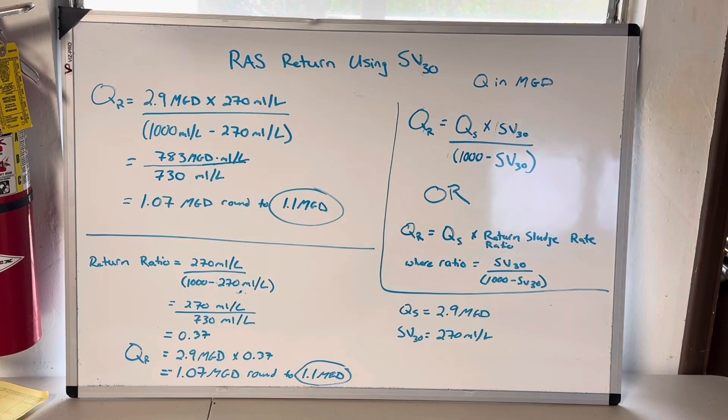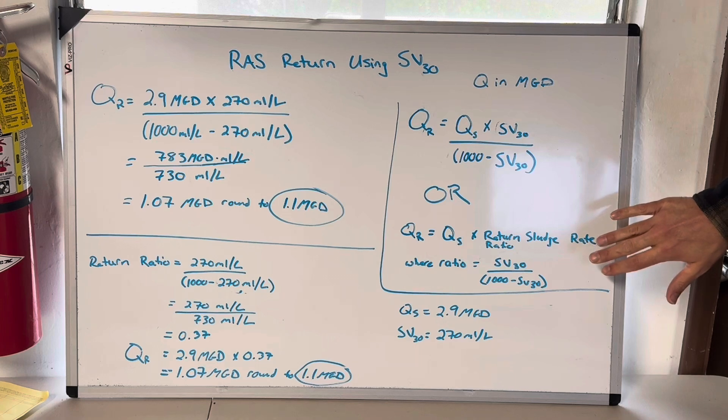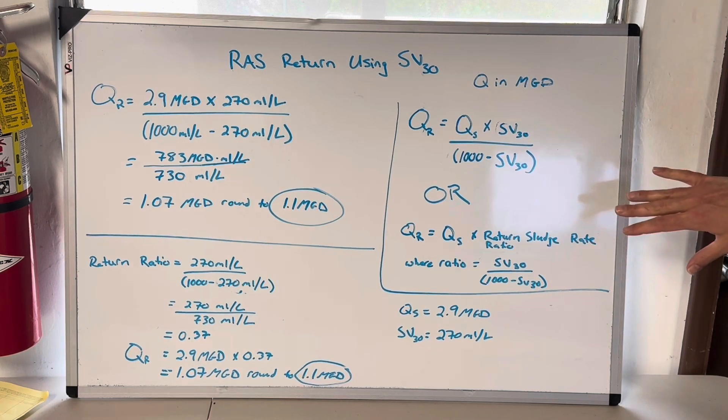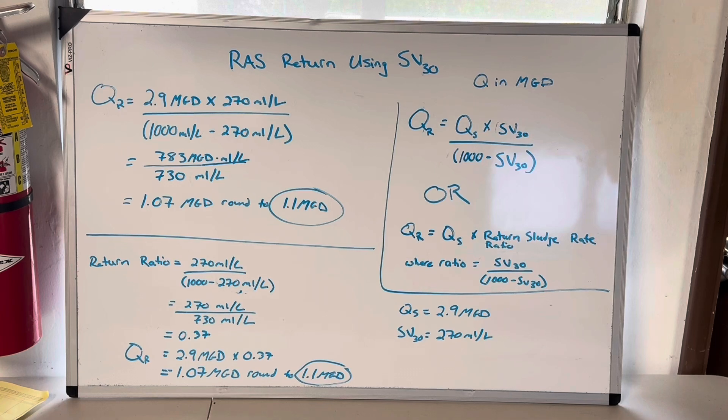RAS return rate using SV30 and secondary influent flow. How do we solve for this? There's two ways. They're really the same way, it's just written a little differently and I find that one of them is better for canceling units out just for my brain anyway. And the other thing we should probably talk about is what is SV30. We haven't talked about it on this channel yet. That is a 30 minute settled solids test. Why settled solids? Settleability test. That's the proper way to say it.